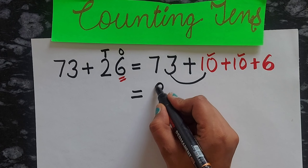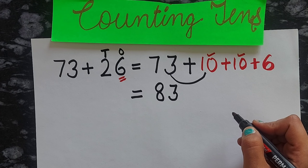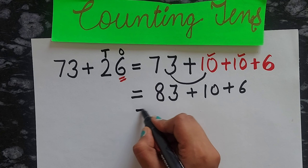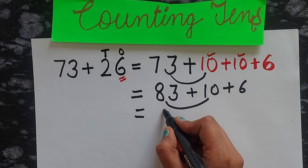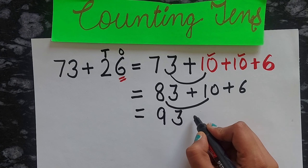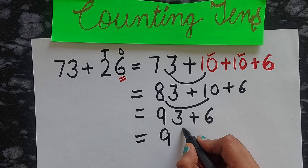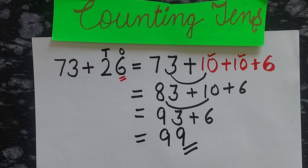First, 73 plus 10 becomes 83. Then 83 plus 10 becomes 93. Then 93 plus 6 becomes 99. So 99 is your answer. I hope the three methods are clear to you. Don't forget to like and subscribe to my YouTube channel. See you in the next video.